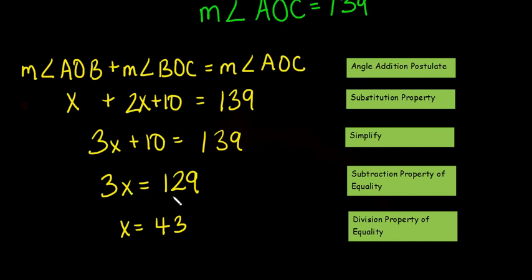3x equals 129. That was using our subtraction property of equality, where we subtracted 10 from both sides. And then x equals 43. We used the division property of equality to do this, where we divided both sides by 3. So, there's our proof using those properties.